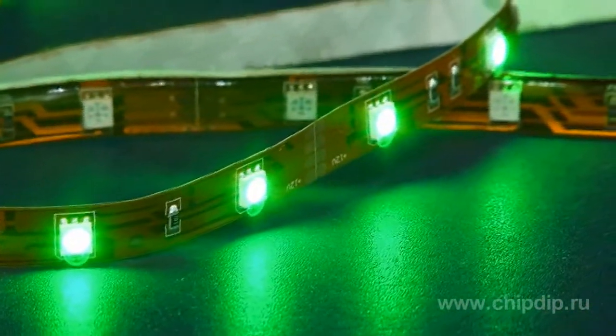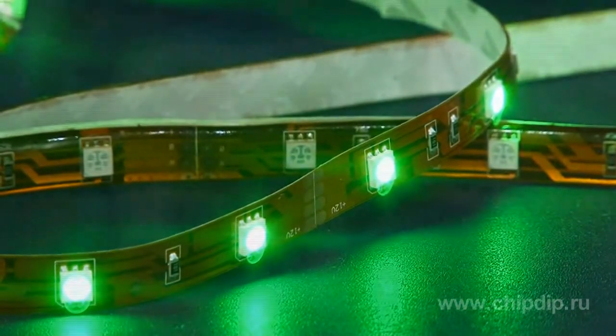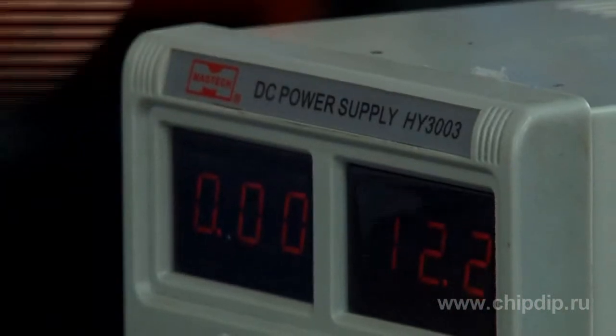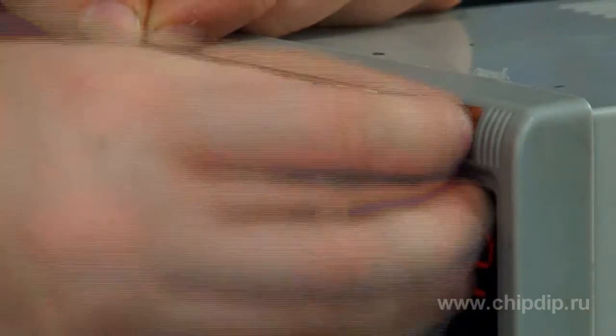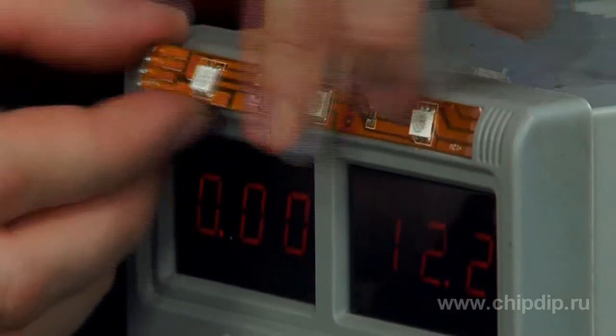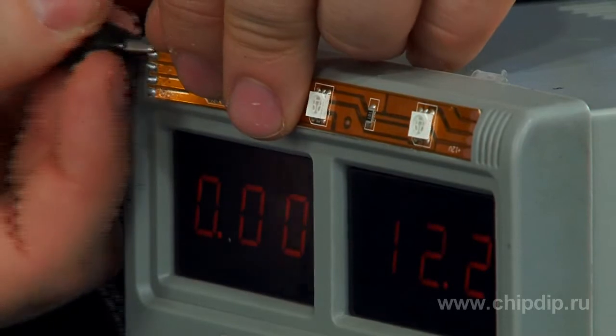The strip has 30 green LEDs per meter. The strip is powered from a constant voltage source of 12 volts. The maximum consumed current is 7.2 watts per meter. More than 50 by 50 millimeter LEDs ensure bright lighting.